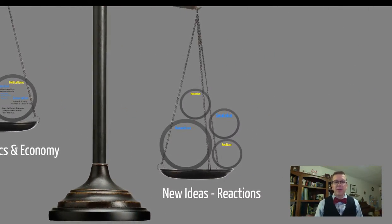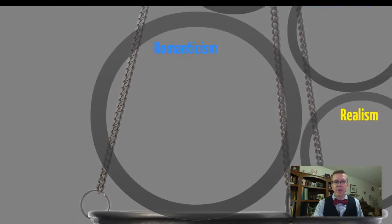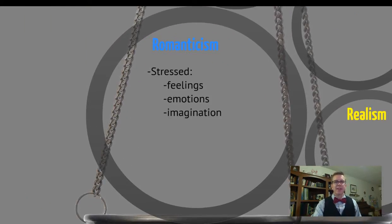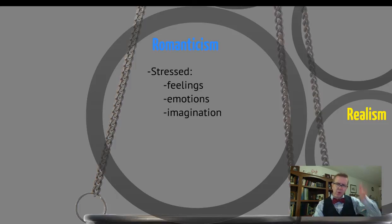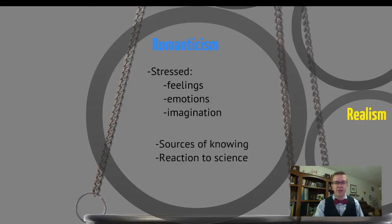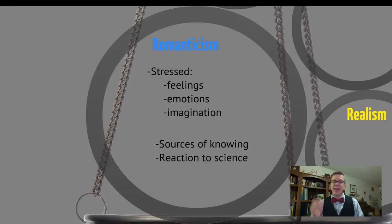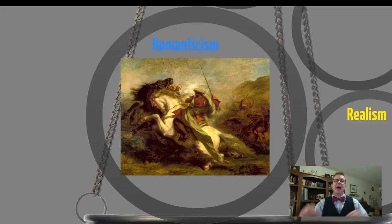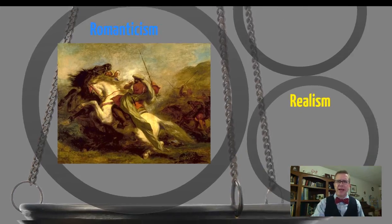Now let's look at some new ideas in this area, starting with Romanticism. Romanticism stressed feelings, emotions, and imagination — this is a reaction to those Enlightenment ideas and the effort to quantify everything mathematically and scientifically. Much like an outgrowth of Rousseau's ideas, Romantics believe we need to rely on our emotions and feelings. They see feelings, emotions, and imagination as sources of knowing, not just science. This reaction to science even tried to make war look romantic — how glorious is that?